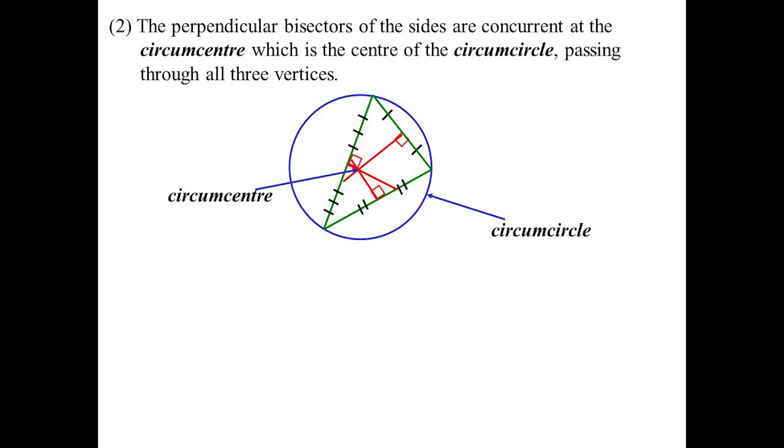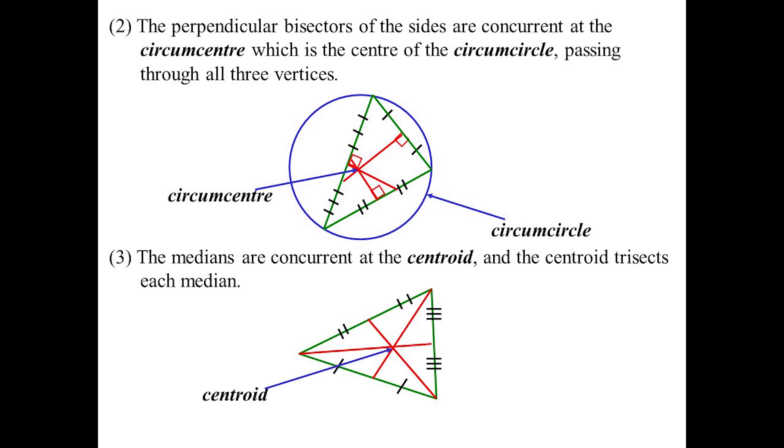The medians also meet. The median is the line that joins the vertex to the midpoint of the other side, and that's called the centroid. The centroid has an interesting property - it trisects, so it's in the ratio one to two. Bisect goes in the ratio one to one, trisect in the ratio one to two.